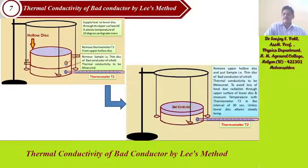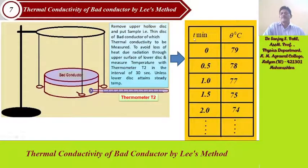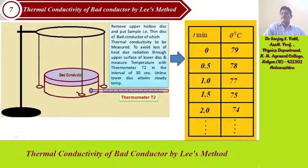Take readings through thermometer T2 at intervals of 30 seconds or 0.5 minutes, until the lower disk attains steady-state temperature or cools to room temperature. Note these readings in tabular form: at 0 seconds, 0.5 minutes, 1 minute, 1.5 minutes, 2 minutes, and so on — recording temperature continuously.